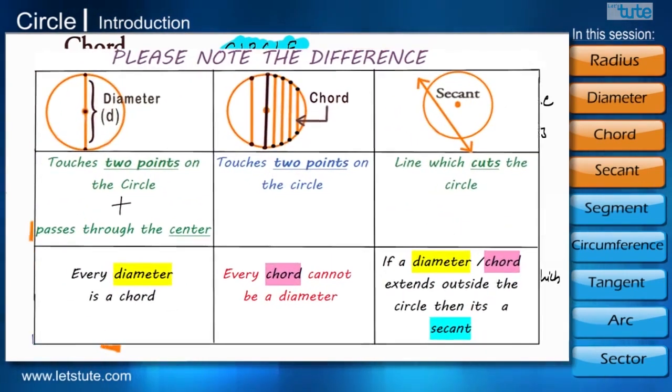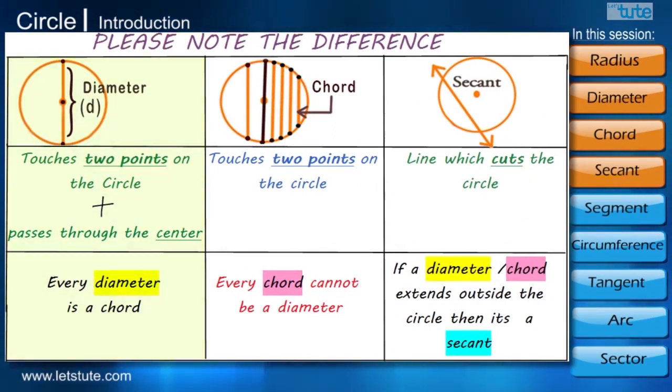Kindly note the difference between diameter, chord and a secant. Diameter is a chord which passes through the center whereas chord touches at any two points on the circle and secant is a line stretching to infinity at both directions.